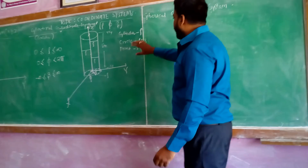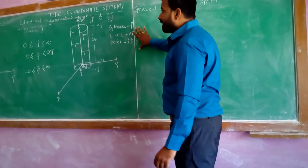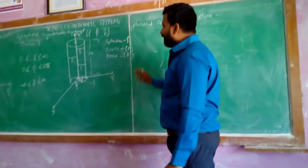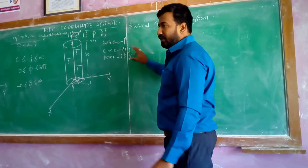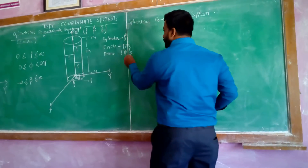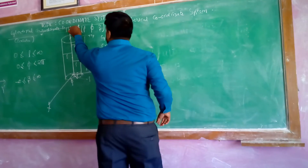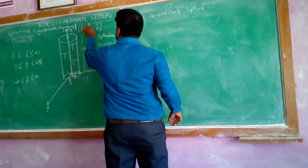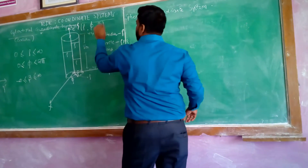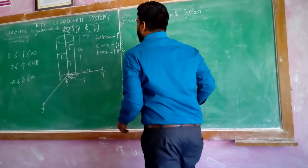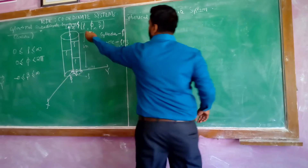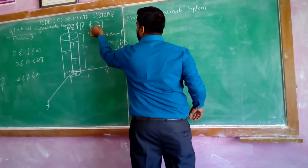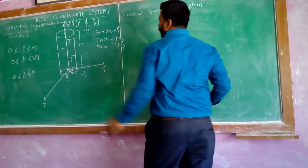Therefore, for any coordinate system, every point is unique and is given by P(rho, phi, z), because for any given point, rho, phi, and z are constants.